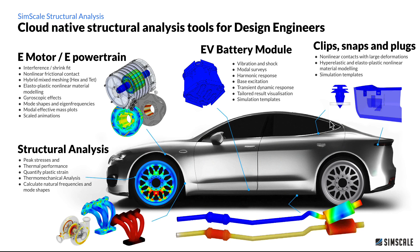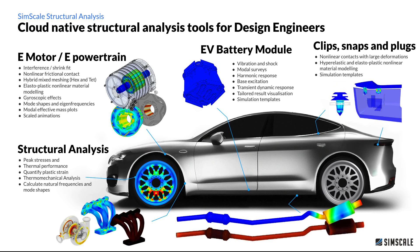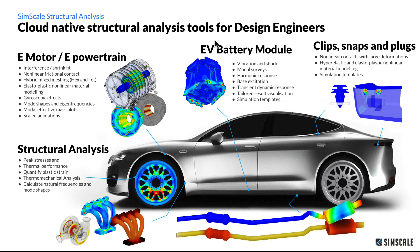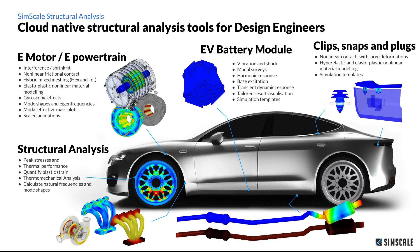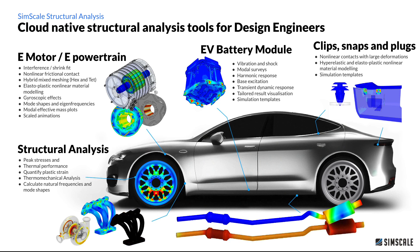For example, with assembly items like one-time snap fit and connection of components, you can do non-linear stress analysis. You can include non-linear material properties to look at the plastic strain that may be developed during the assembly process and design out potential problems. With use cases such as EV battery modules, design engineers can look at the vibration and frequency analysis of the assembly to make sure they're not designing in any unwanted harmonic frequencies, including base excitation and transient dynamic responses to shock loads.